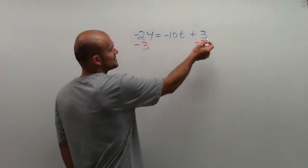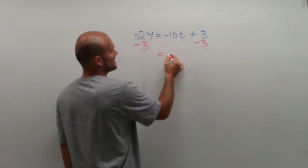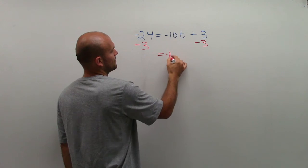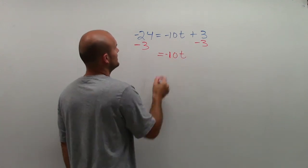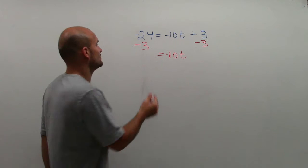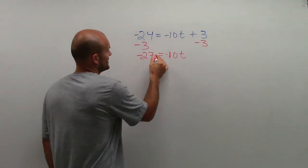Now, 3 minus 3 is 0. So on this right side, I'm just going to have negative 10t equals negative 24 minus 3, which will be negative 27.